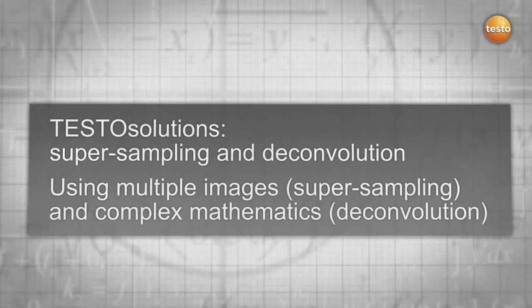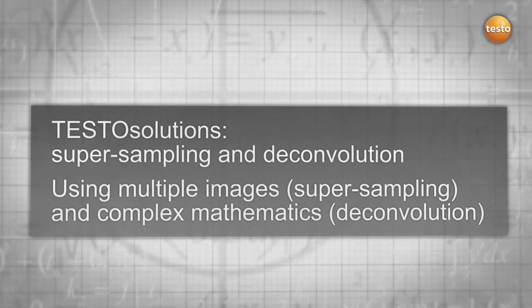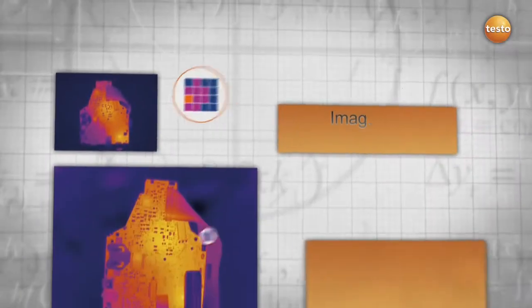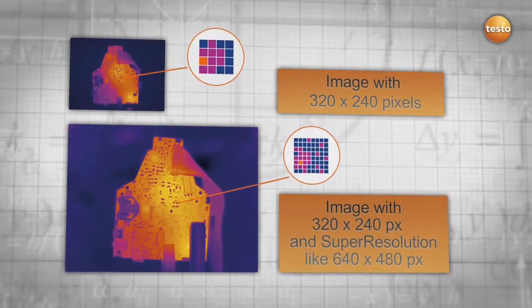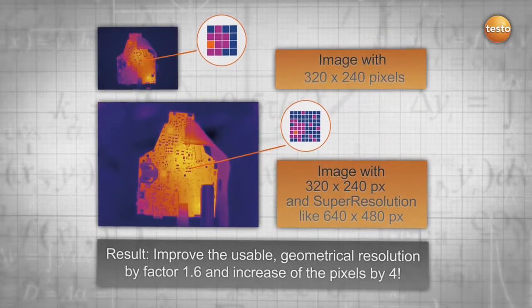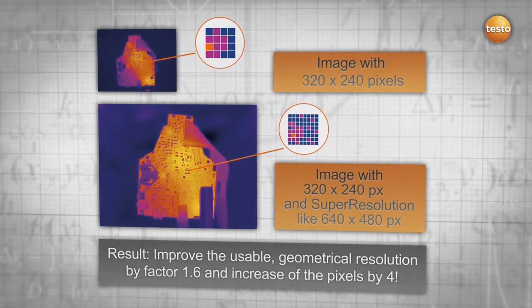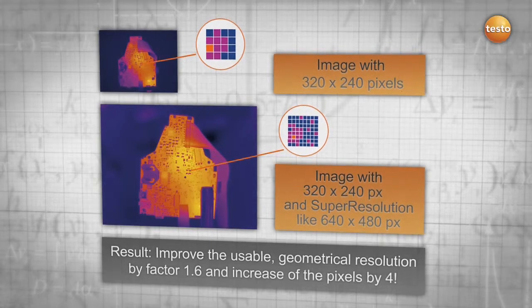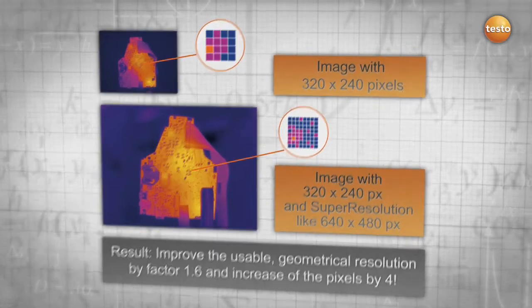By using multiple images, supersampling and complex mathematics, deconvolution, you get more information out of your thermal images. Your result? An improvement of the geometrical resolution by 1.6 and an increase in your pixels by 4 for more details and safety.